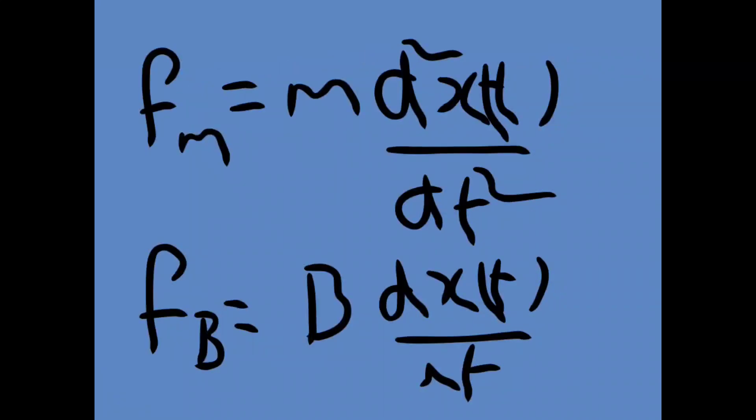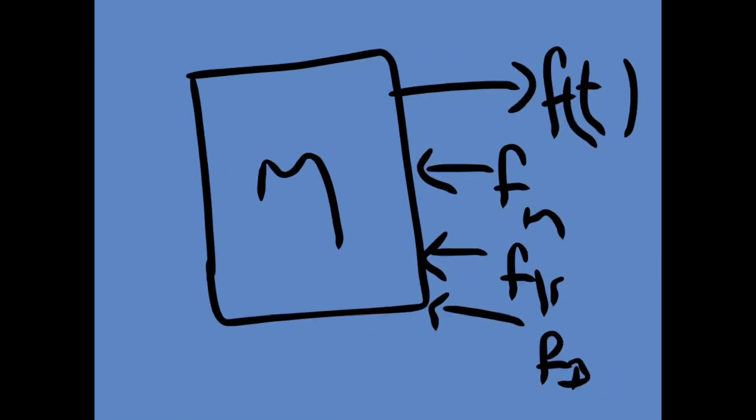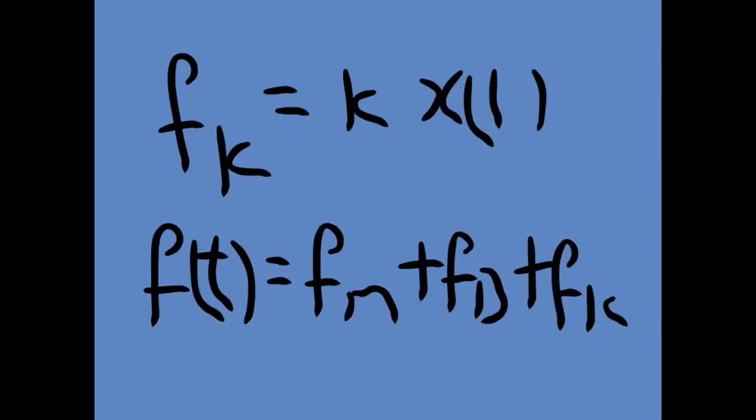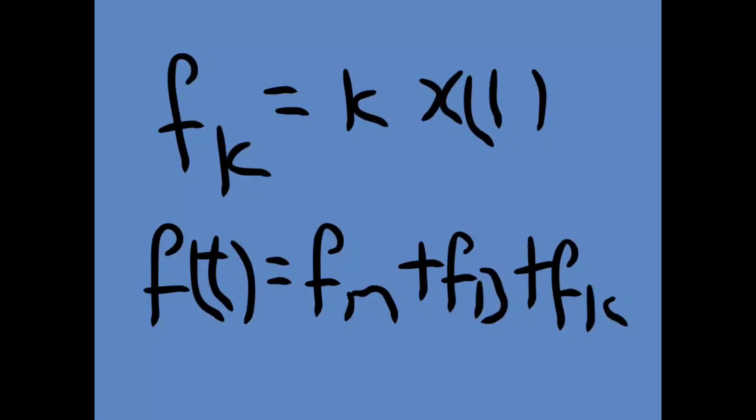After that, we identify what forces are there. Input force equal to Fm plus Fb plus Fk, the opposing forces. For each of those, we write equations from previous class knowledge. Finally, F(t) equal to Fm plus Fb plus Fk, we substitute the equations.